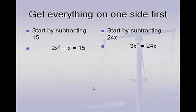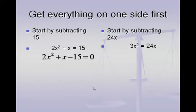Next we look at what happens when we don't have the equation set equal to zero as we start. On the first problem, we have the equation set equal to 15. So our very first step would be to subtract that 15 over to the left, so our equation will now be 2x squared plus x minus 15 equals zero. We're going to factor this using the bad math method for harder trinomials. We started with a 2x squared, so I want to start each parenthesis with a 2x. Remember this is not correct — we're going to go back at the very end and fix it.